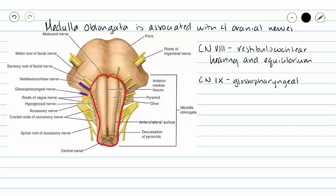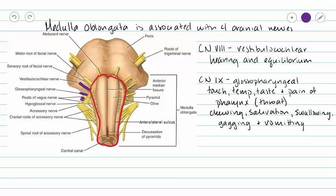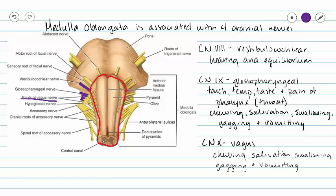The medulla oblongata is also associated with our vagus nerve, whose rootlets we see here. With the vagus nerve we have some overlap with cranial nerve nine, including chewing, salivation, swallowing, gagging, and vomiting. We skip eleven and go straight to cranial nerve twelve, the hypoglossal nerve, which controls the movements of our tongue. So our medulla oblongata also has function in speech. Our four cranial nerves associated with the medulla oblongata are cranial nerves eight, nine, ten, and twelve.